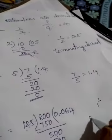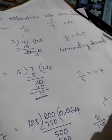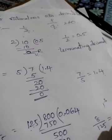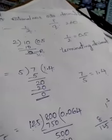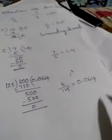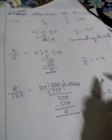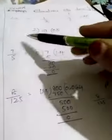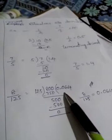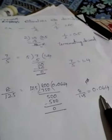So 8 by 125 converted into decimal is 0.064. This is a terminating decimal. Like that, fractions are converted into terminating decimals.